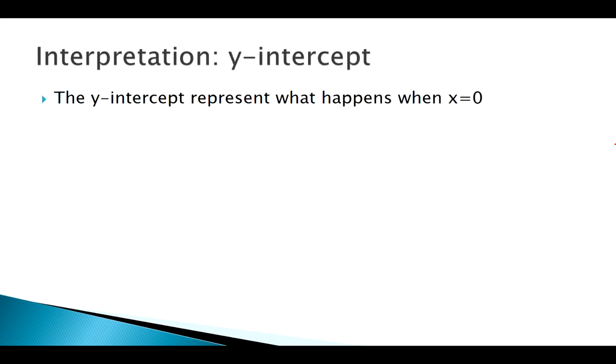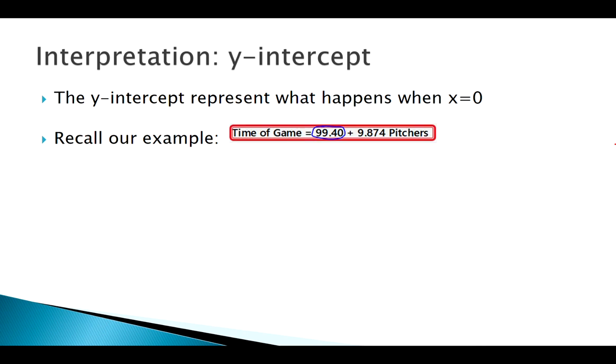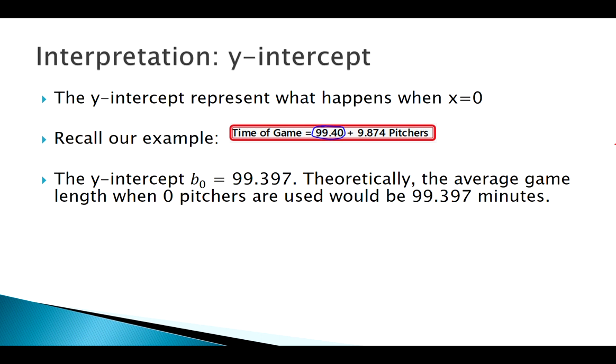What about the y-intercept? That's telling us what happens when x is zero. For our example, that was 99.397. Our slope is usually pretty useful interpretation, but our y-intercept doesn't always make a whole lot of sense.